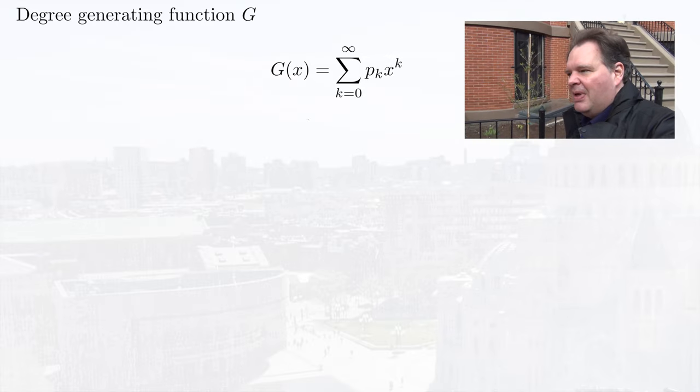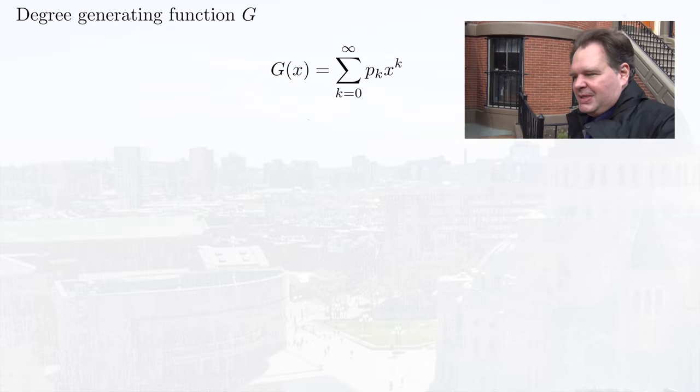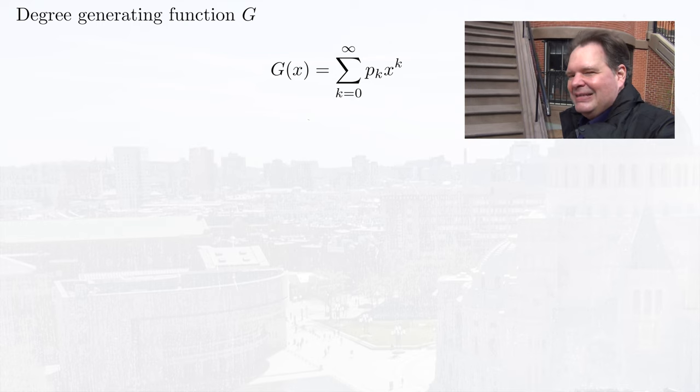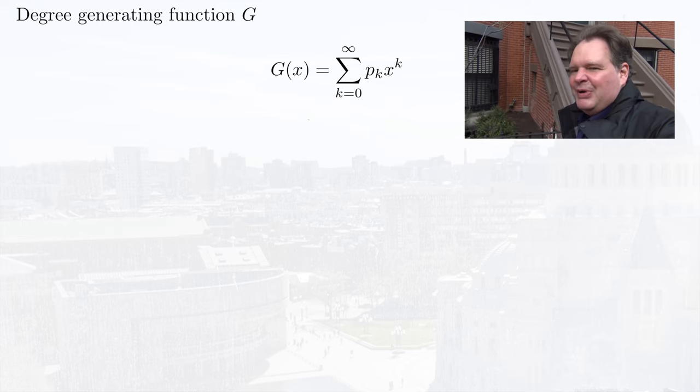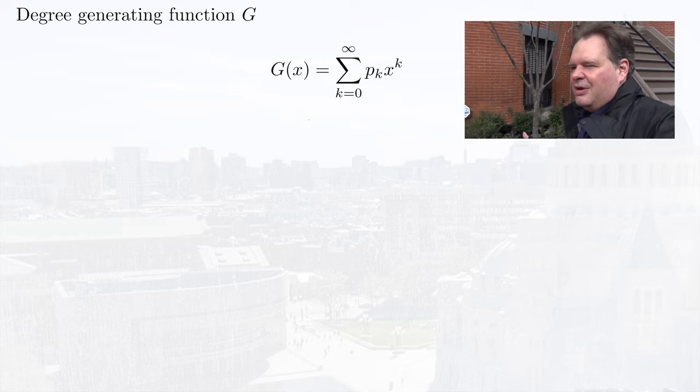So how can we think about our initial example where fallen trees remove links from our network? Fortunately, we have generating functions now, and generating functions make this a whole lot easier. Let's recap: if you have a network with a degree distribution P_k, you can write the generating function for this degree distribution as the sum over P_k x to the k, and we will call this G, the degree generating function.